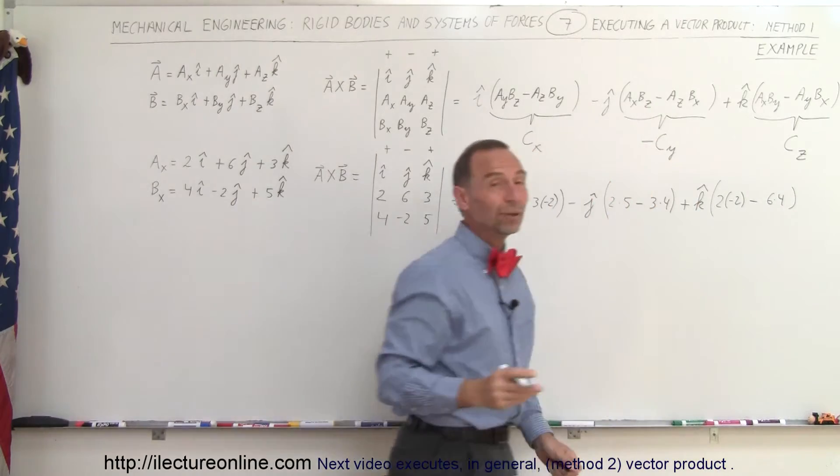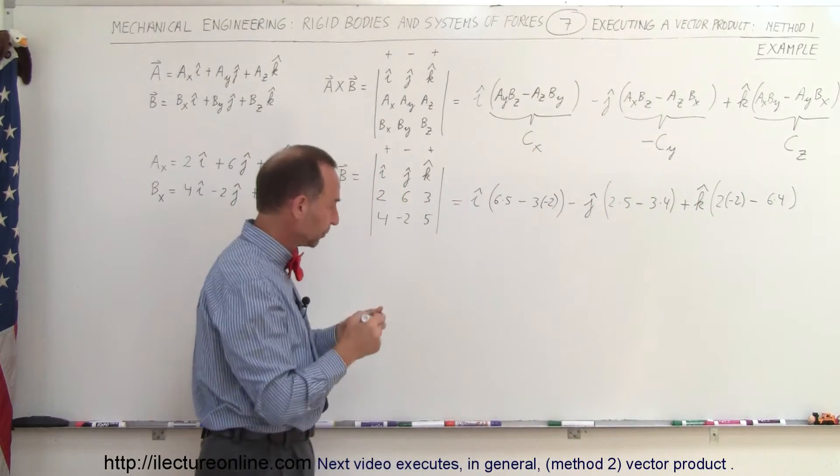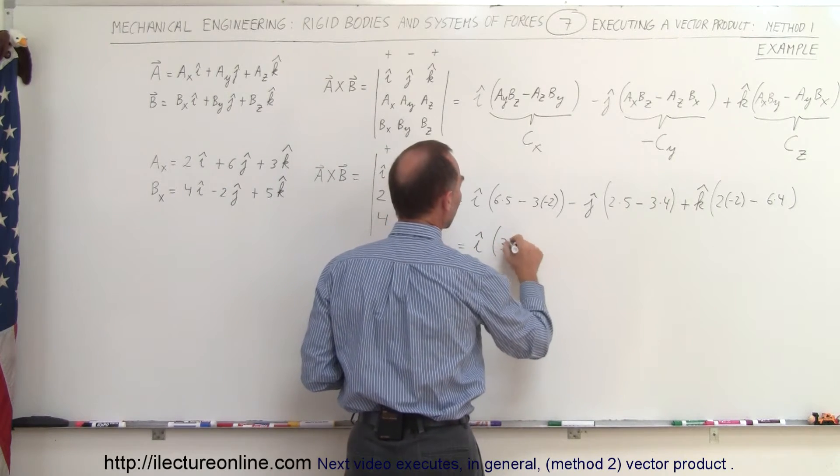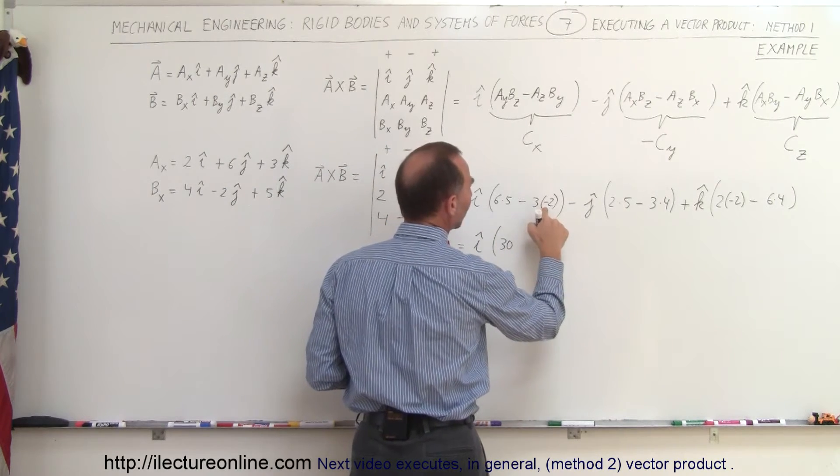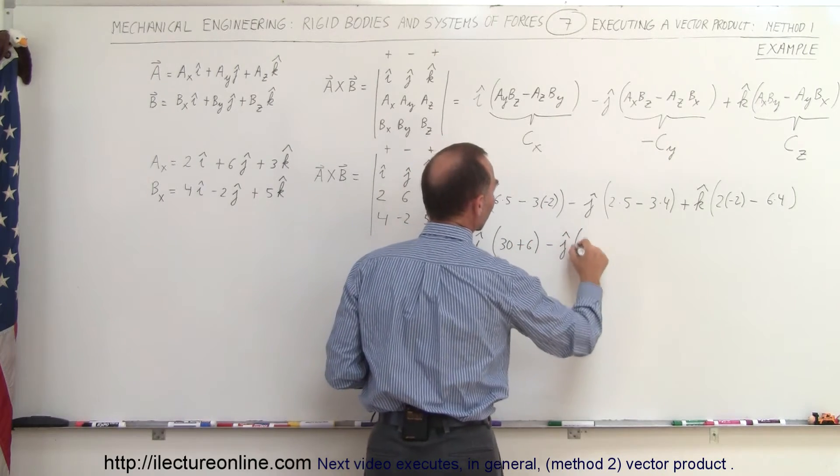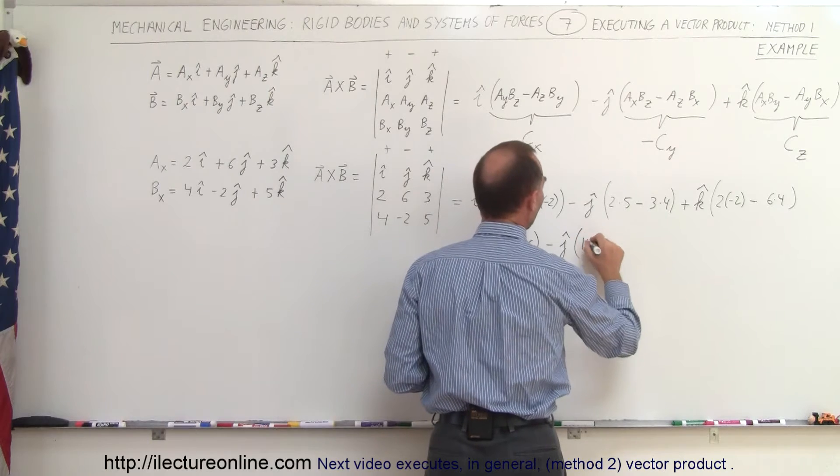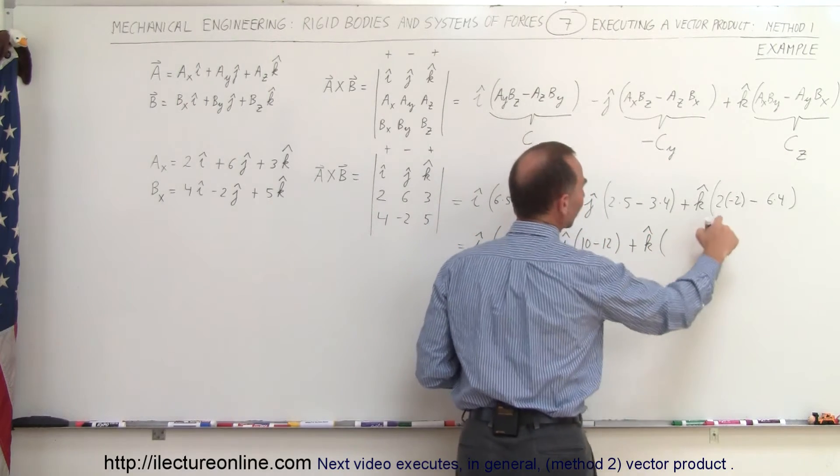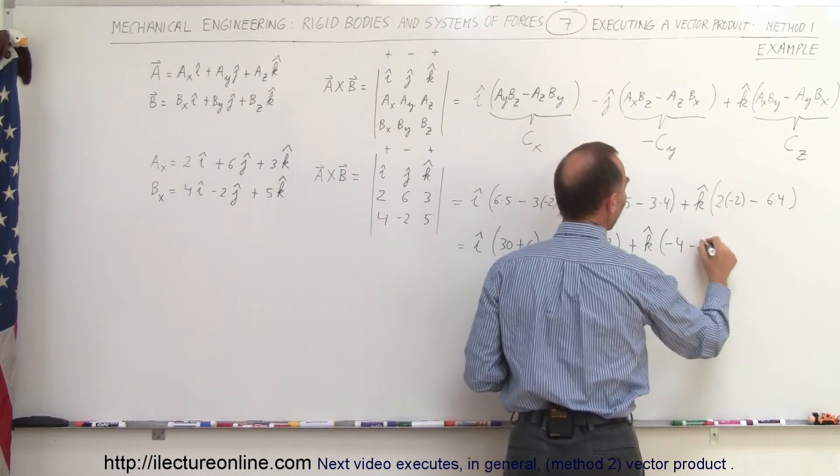Alright, now all we have to do is simplify what we have. So this becomes I times, that is 30, minus times a minus which is plus 6, minus J times 10 minus 12, plus K times, that would be minus 4 minus 24.